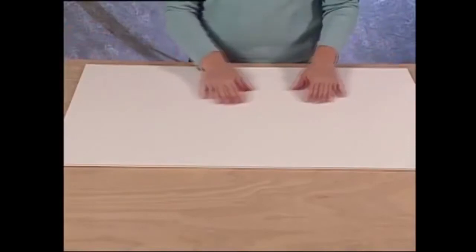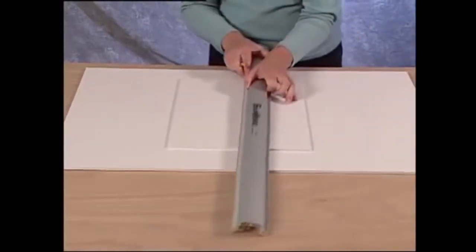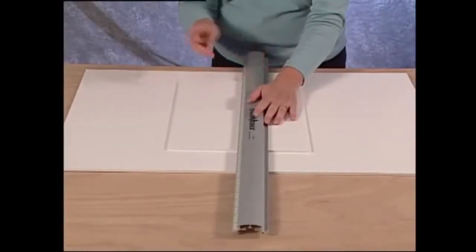Always make sure you are using a scrap piece of foam board under the foam board you are going to V-Groove. Use the channel rail to make reference marks where you want the V-Groove to appear.